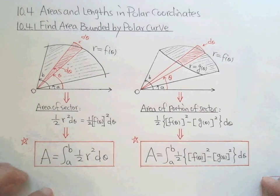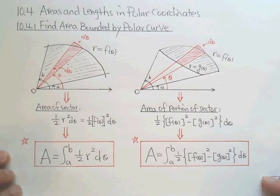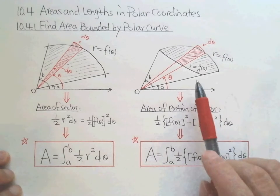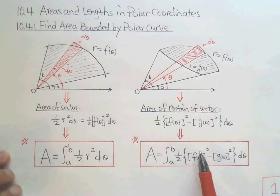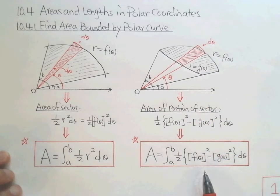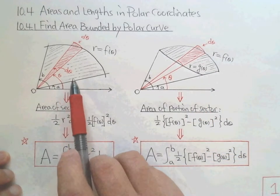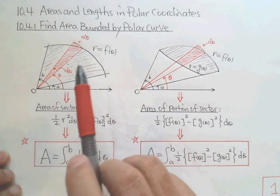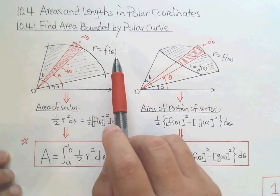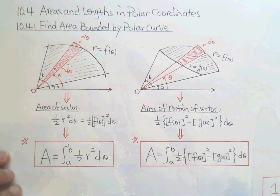And then we have everything. These are the two cases. For the second case I don't have an example, but it's similar. All we need is the formula. I'll give you examples for the first part — the area formed by one polar curve.